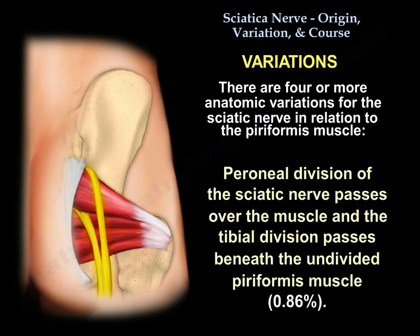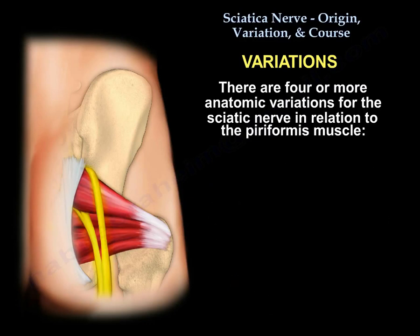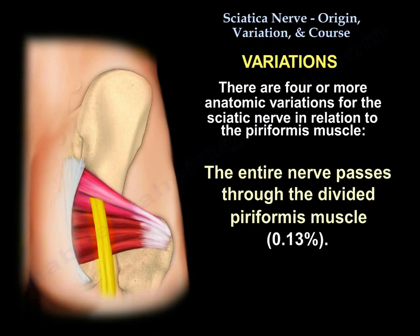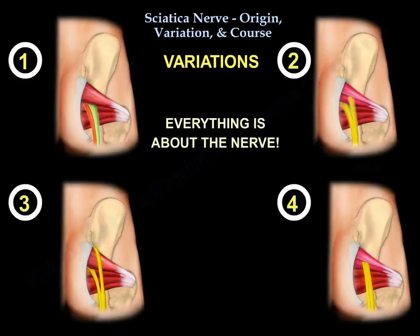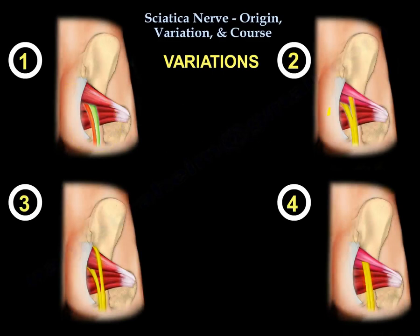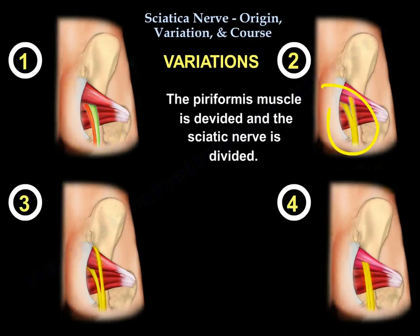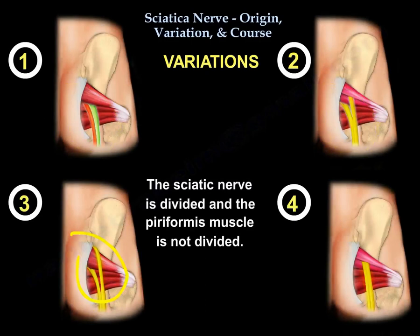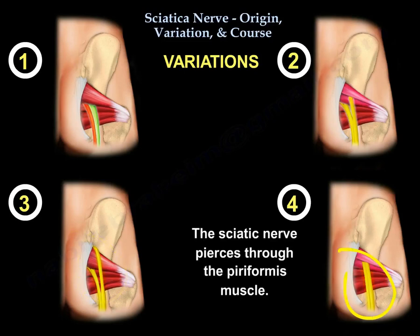Another pattern, which is rare at less than 1%, has the peroneal division passing over the muscle while the tibial division passes beneath the undivided piriformis muscle. The last pattern, which is extremely rare, has the entire nerve passing through the divided piriformis muscle. In summary: the nerve passes underneath in the majority of cases; the piriformis is divided with the nerve divided; the nerve is divided but the piriformis is not; or the nerve pierces through the piriformis muscle.